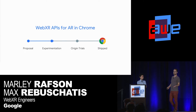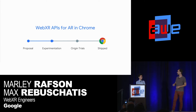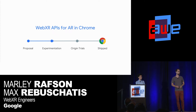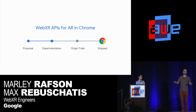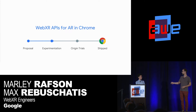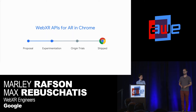We started building this API into Chrome once we got consensus from the working group. Right now we're releasing it in Chrome Canary — it should be available any day now. Once it's in Chrome Canary, everybody can experiment with it. We encourage you all to check it out, try building stuff, and give us your feedback. It will go into origin trials after that, and then hopefully in the relatively near future it will be shipped in production in Chrome, and you can start building AR experiences on the web that all 100 million devices can experience.